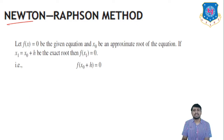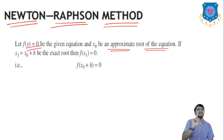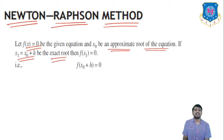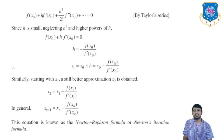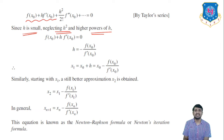For Newton-Raphson: let f(x) = 0 be the given equation and x0 be the approximate root. We need only one initial approximation x0. Let x1 = x0 + h where h is very small. Then f(x1) = 0, meaning f(x0 + h) = 0. Using the Taylor series expansion: f(x0) + h·f′(x0) + (h²/2!)·f″(x0) + ... = 0. Neglecting h² and higher powers of h, we get f(x0) + h·f′(x0) = 0.